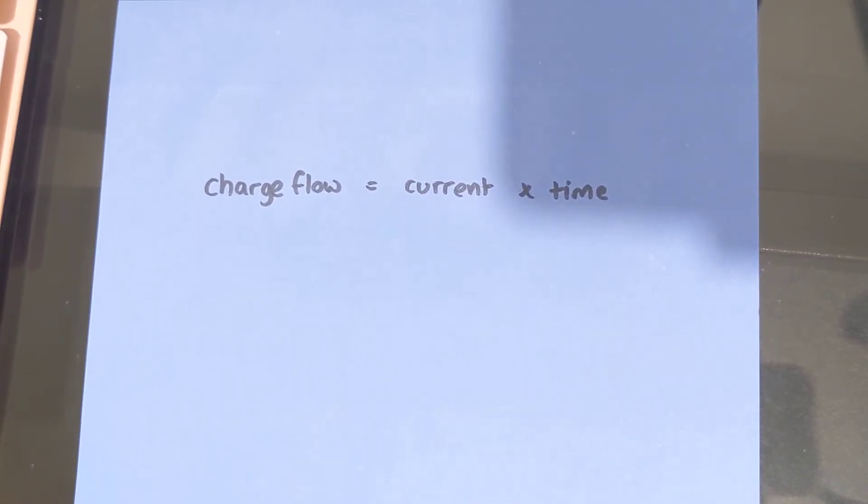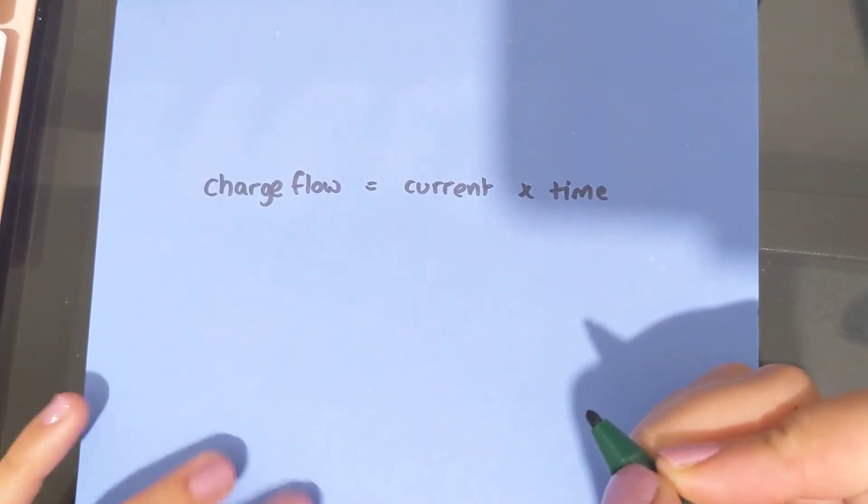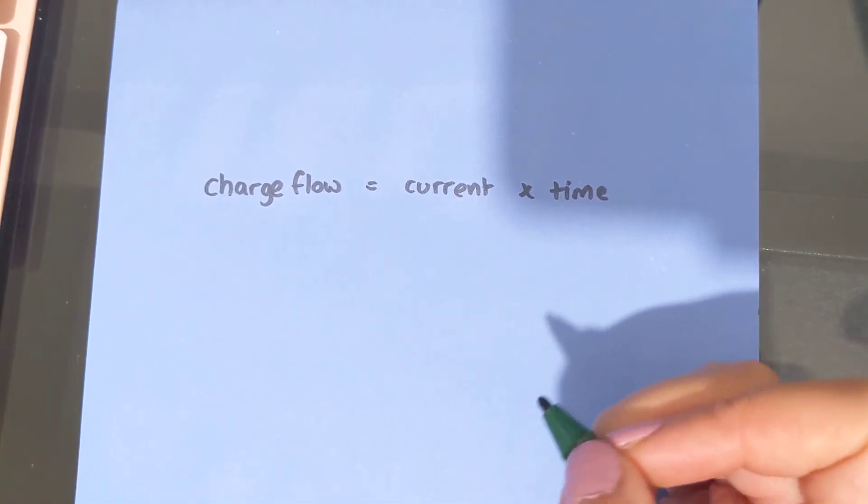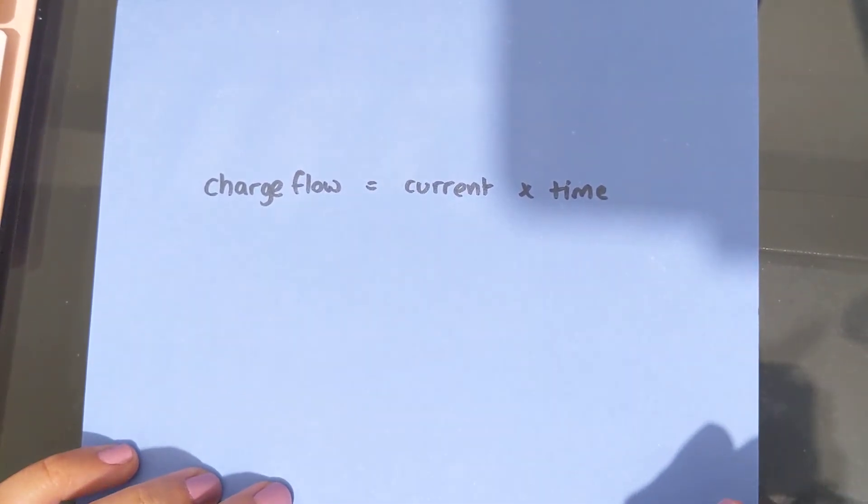And so charge flow is equal to current multiplied by time. Now, what's a bit confusing is the symbols for this equation because they don't really relate to the first letters of these words.